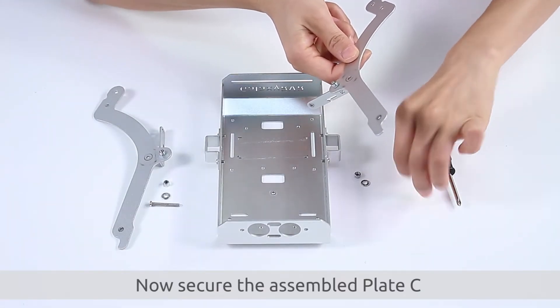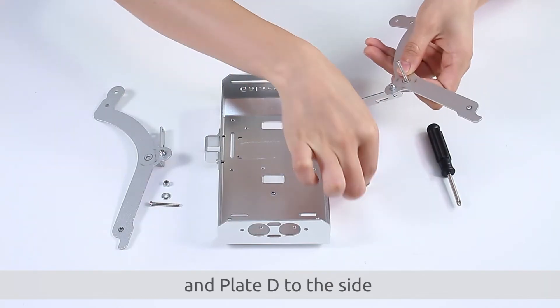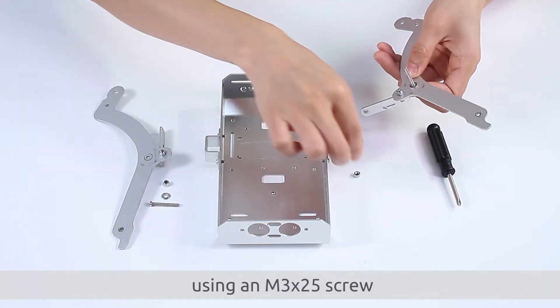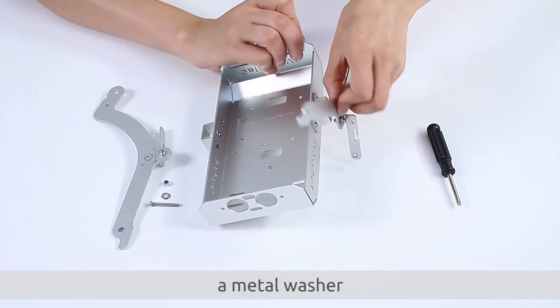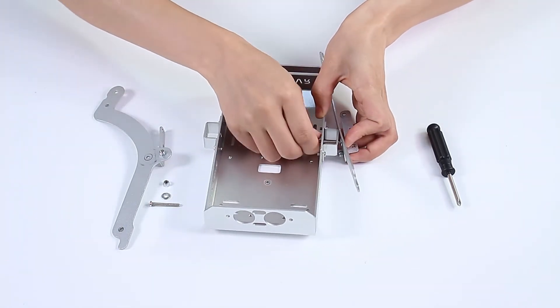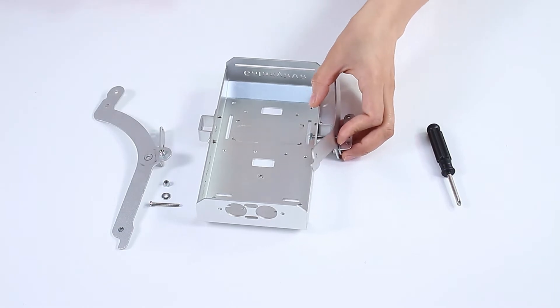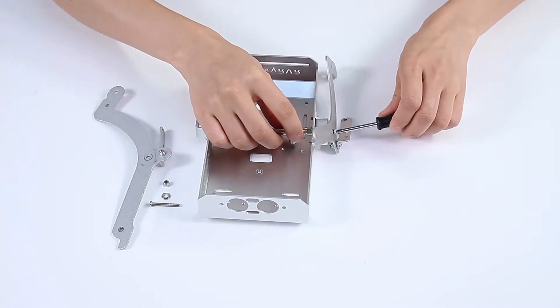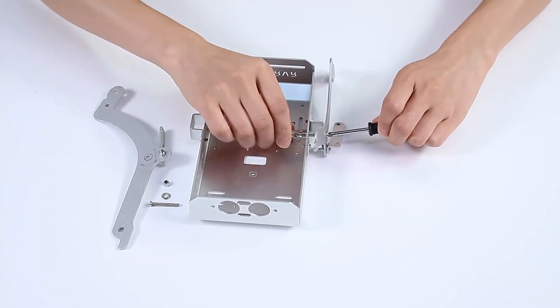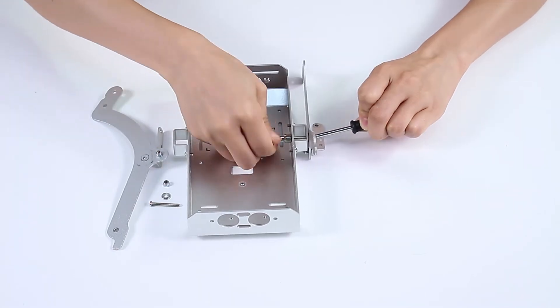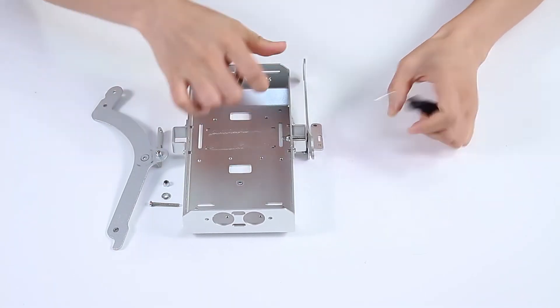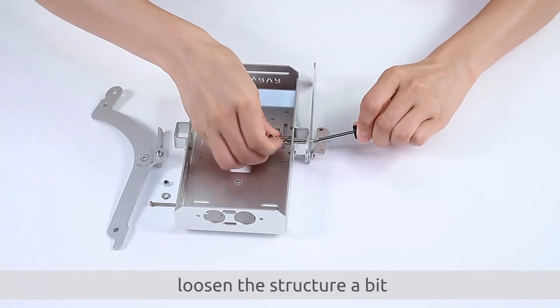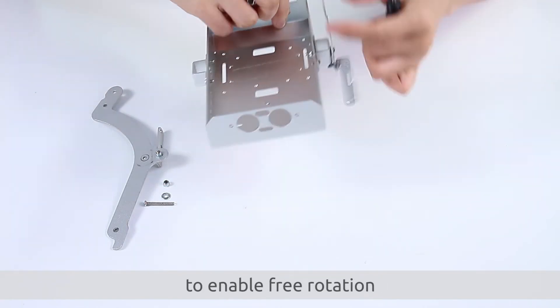Now secure the assembled plates E and plate D to the side using an M3 x 25 screw, a metal washer, and a self-locking nut. Once again, loosen the structure a bit to enable free rotation.